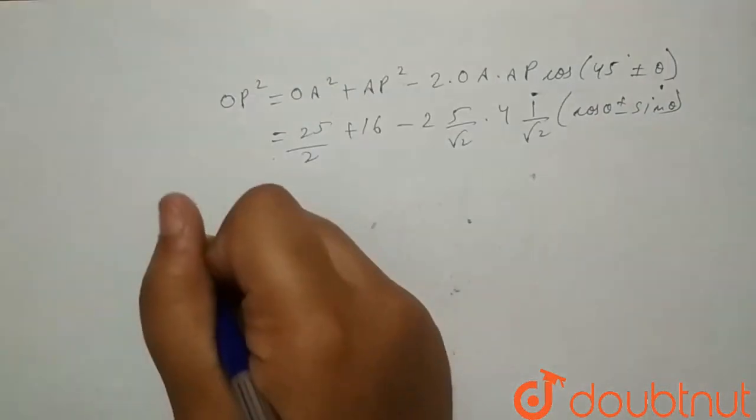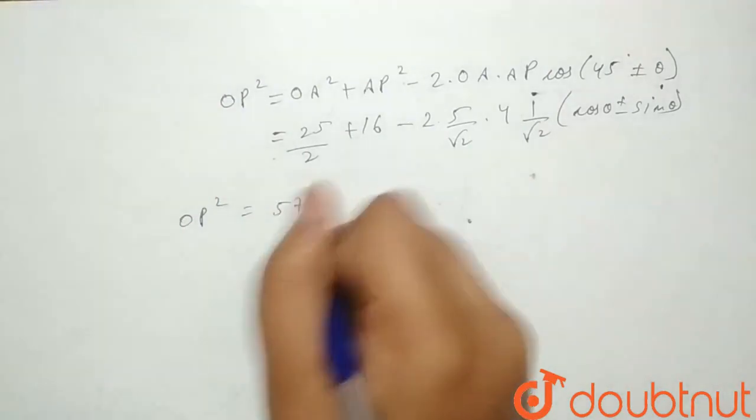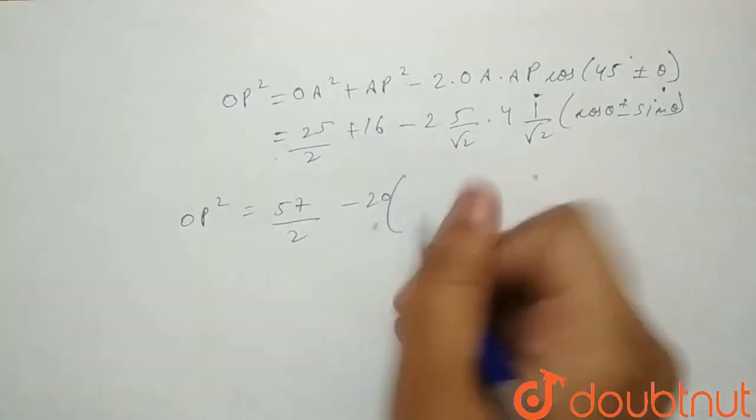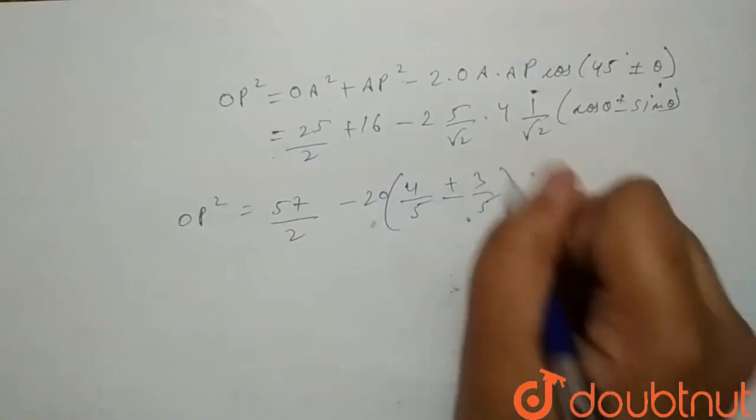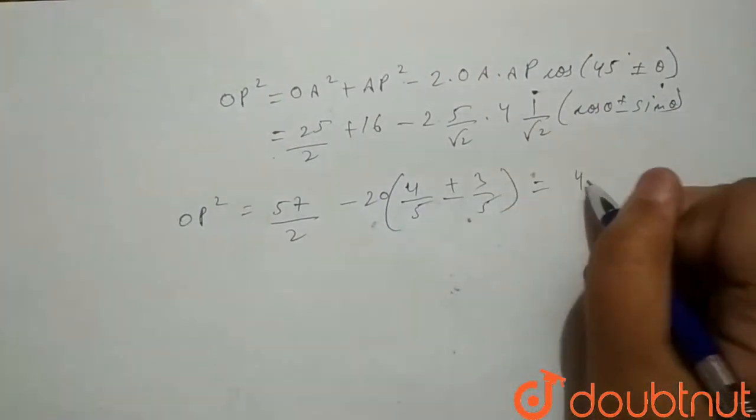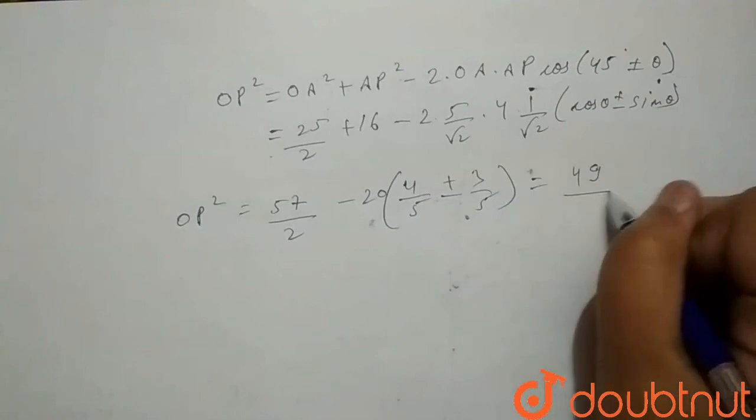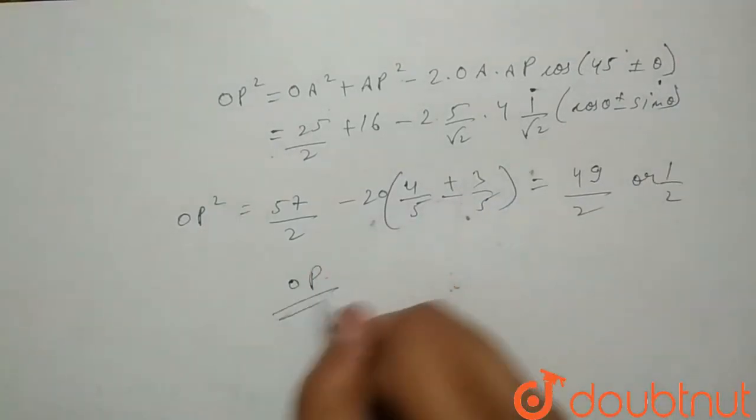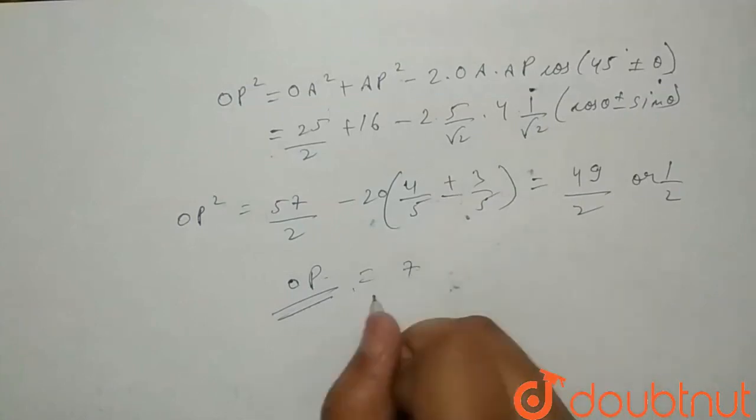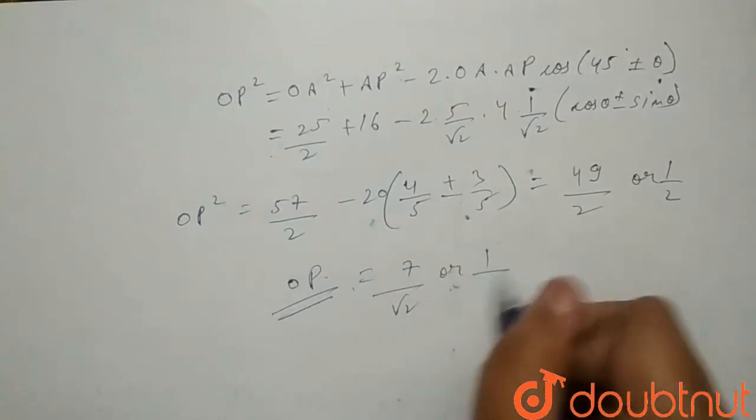So you will get the value of OP squared as 57 by 2 minus 20 times 4 by 5 plus or minus 3 by 5. And the final result of OP squared will be 49 by 2 or 1 by 2. So the value of OP will be 7 by root 2 or 1 by root 2.